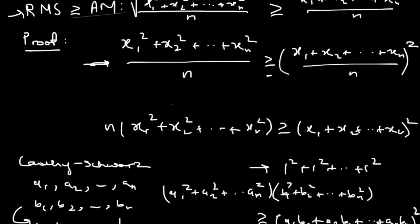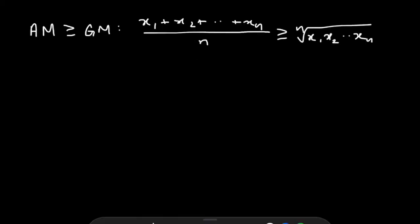Let's move on to proving that the arithmetic mean is greater than or equal to the geometric mean. For the AM-GM inequality, I'm only going to show it for the n = 2 case for the sake of time — the general case for n terms is beyond the scope of this video, but I'll leave a link to that proof in the description. I encourage you to try it for n = 3, n = 4, and maybe even the general case.